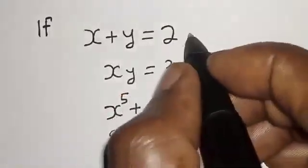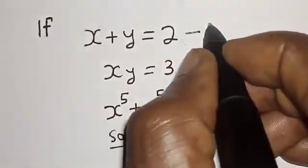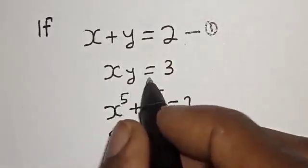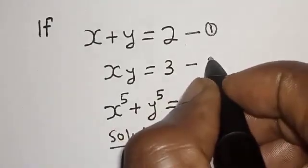s plus y is equal to 2 — let's call this equation 1. And xy is equal to 3 — let's call this equation 2.